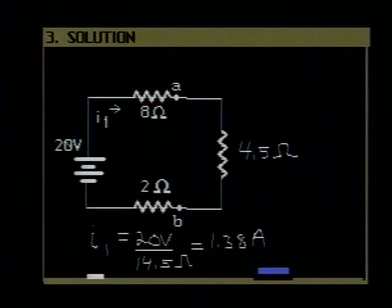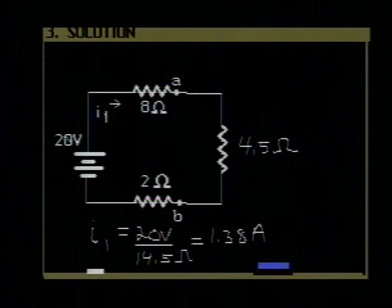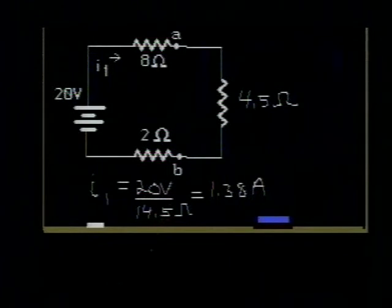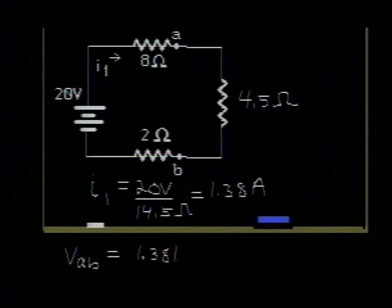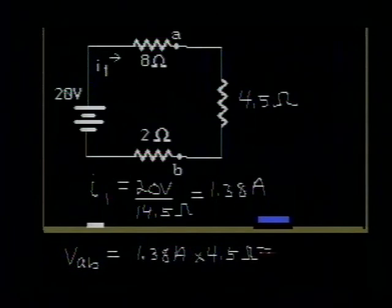The next thing I want to do is to find the voltage drop between A and B, and that can be found now, again using Ohm's Law. I can write that the voltage drop from A to B is simply equal to the current, 1.38 amps, multiplied by the resistance from point A to B, which is 4.5 ohms. If you carry out this multiplication, you should find that this is 6.21 volts.